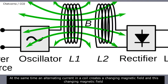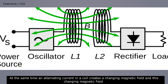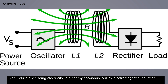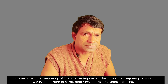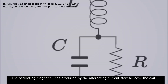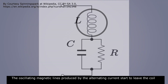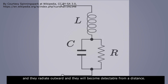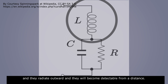At the same time, an alternating current in a coil creates a changing magnetic field, and this changing magnetic field can induce a vibrating electricity in a nearby secondary coil by electromagnetic induction. However, when the frequency of the alternating current becomes the frequency of a radio wave, something very interesting happens: the oscillating magnetic lines produced by the alternating current start to leave the coil, radiate outward, and become a magnetic field detectable from a distance.